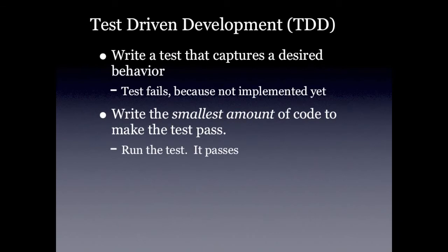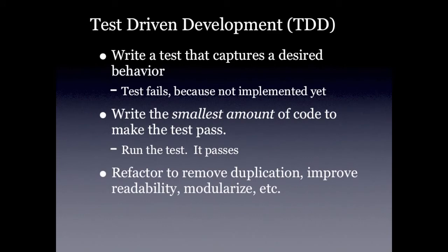Now we run the test and it passes — and this may not happen all in one step, you may make some mistakes along the way. Now we do a very critical step in the process: we refactor. When we talk about refactoring, what we're trying to do is improve the code — take out duplication, make it more readable, maybe make it more modular. We can put things in helper functions or private methods, trying to make the code better. And when you run the test after refactoring, it had better still pass, because if it hasn't, you've broken something in the course of refactoring.